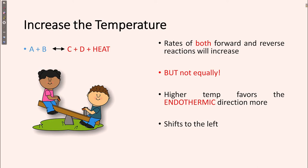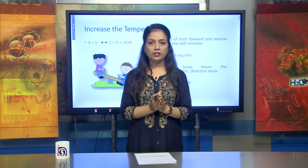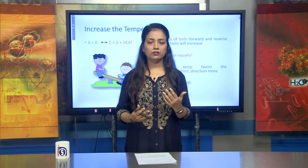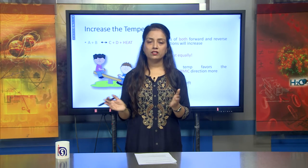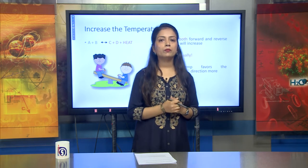When heat is evolved during the reaction, the rates of both forward and reverse reactions will increase but not equally. Higher temperature favors the endothermic direction more — that means shift to the left. So if we take a container and give some amount of heat, the forward reaction will increase, and because of equilibrium stabilization, this will then shift to the backward direction and a new equilibrium will be established.